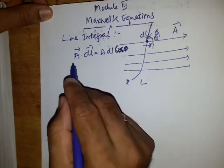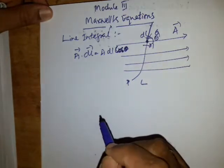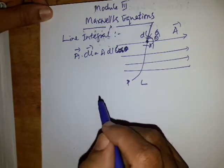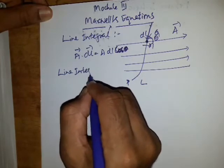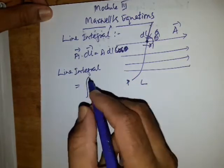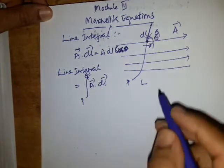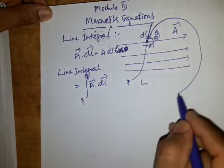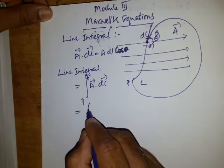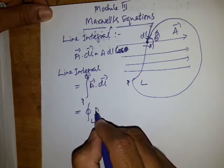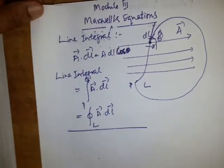So this product, we can integrate this along the line. So we can take the line integral of this product from P to Q. So line integral is given by P to Q A DL. If this path is a closed path, then the same integration over a closed path L is given by, so this is known as the line integral. So integration along a line.